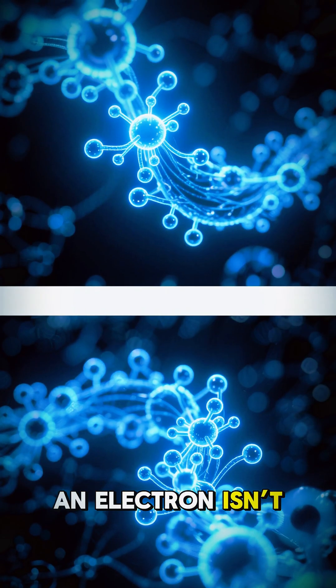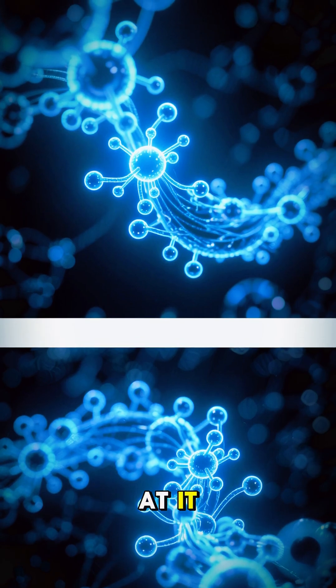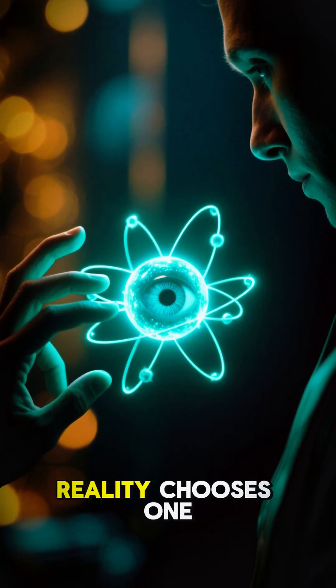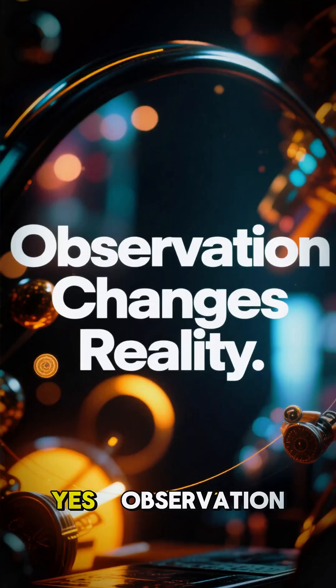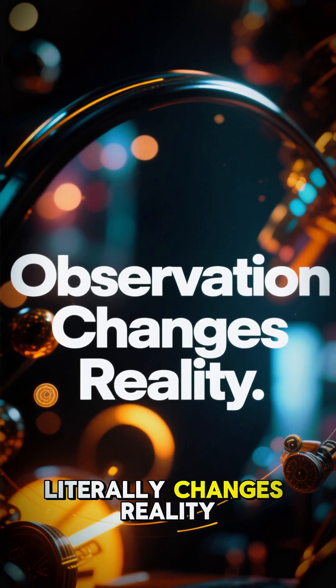An electron isn't just here or there, it's both. Until you look at it, the moment you observe it, reality chooses one option. Yes, observation literally changes reality.